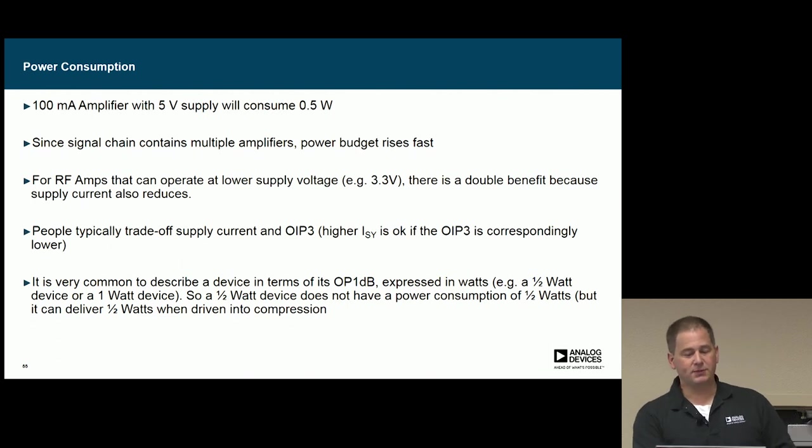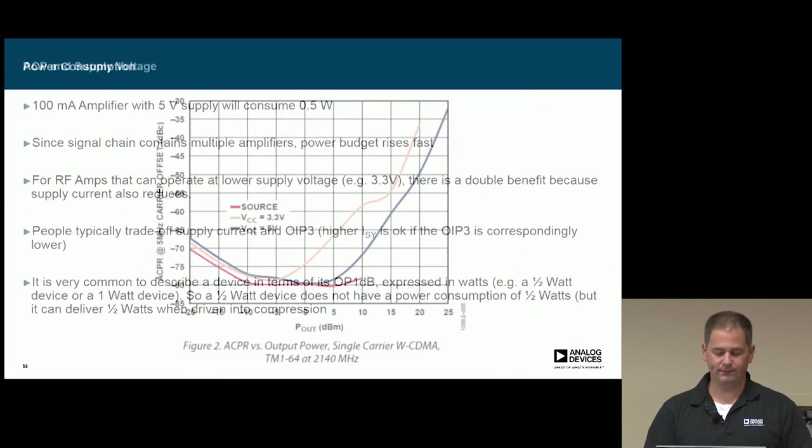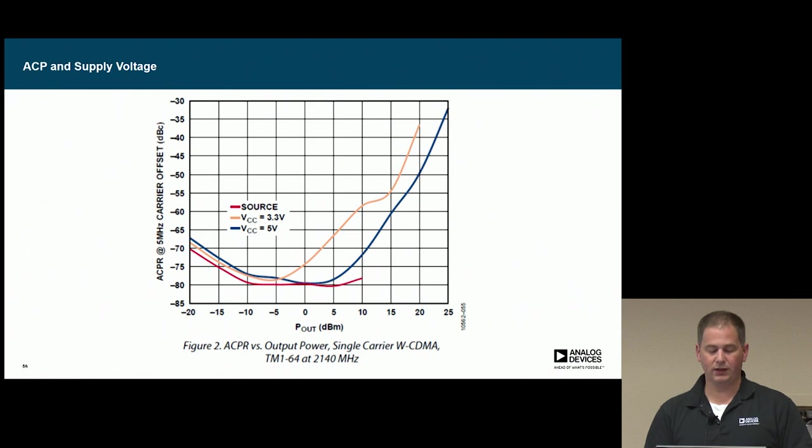From a power consumption standpoint, RF amplifiers are not super efficient. A 100 milliamp amplifier with five volts will consume basically half a watt and get pretty warm. This is actually ACPR versus output power for a single carrier WCDMA waveform. We can see that it does make a difference between your output power between 3.3 volts and 5 volts supply.